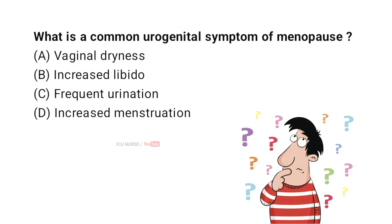What is a common urogenital symptom of menopause? A. Vaginal dryness. B. Increased libido. C. Frequent urination. D. Increased menstruation. And the correct answer is A. Vaginal dryness.